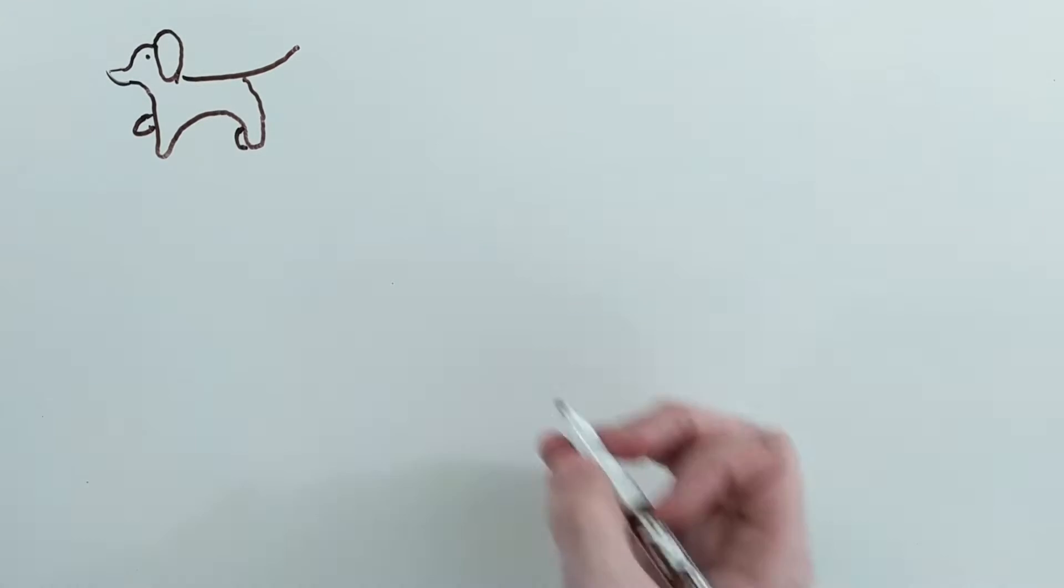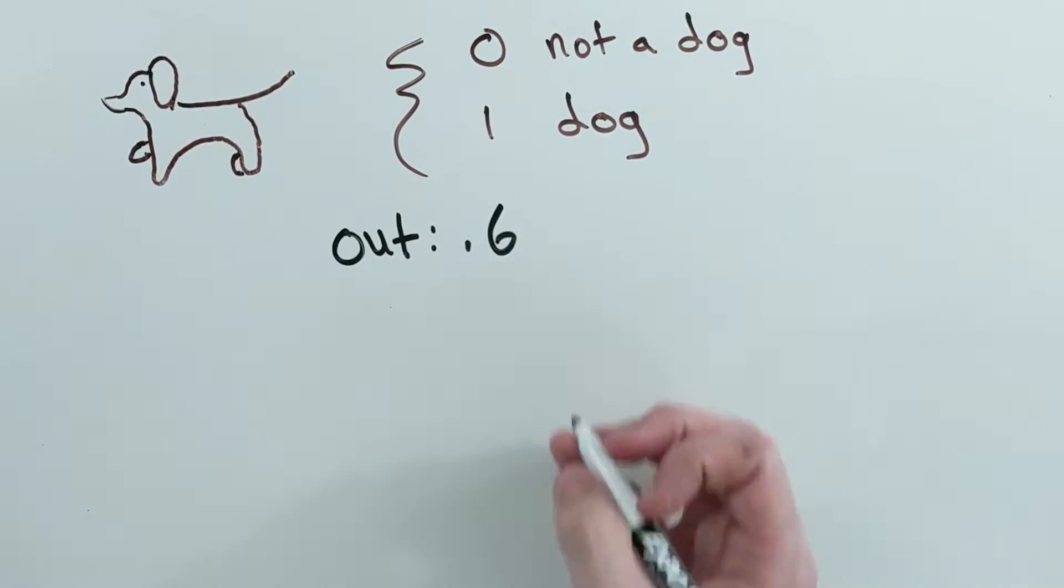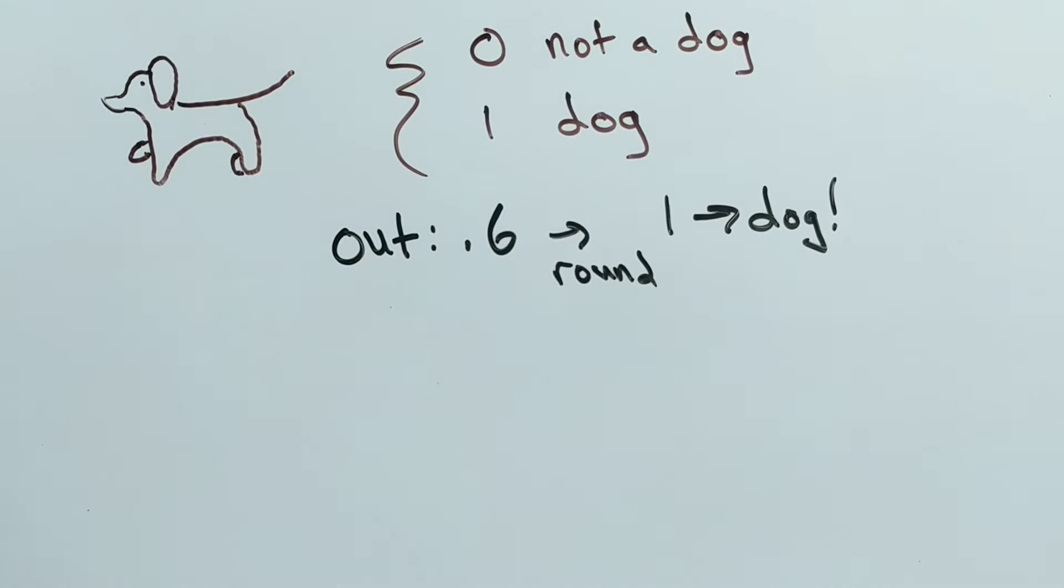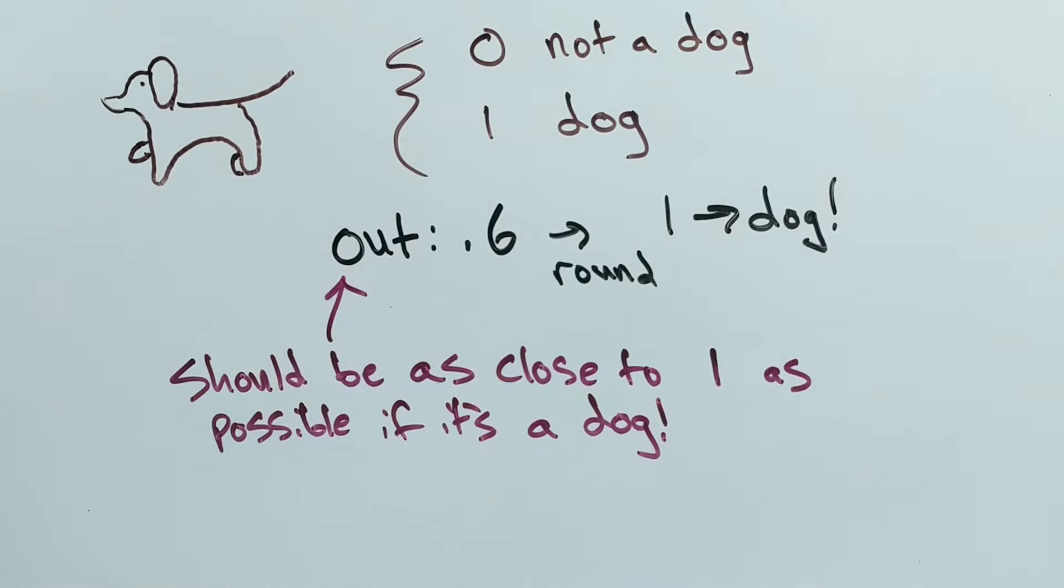For example, if you're trying to classify whether or not a picture has a dog in it, your algorithm might output 0.6. After rounding, you see that you predicted this was a dog. However, during training, you're constantly trying to get better and better predictions. For example, if something is a dog, then we want the algorithm to output as close to 1 as possible.